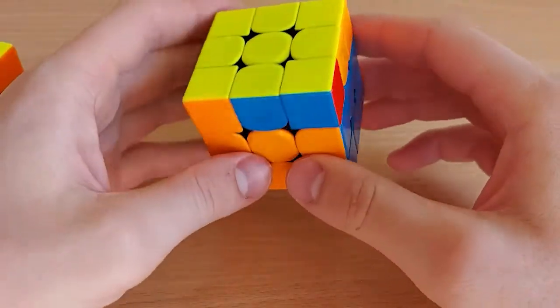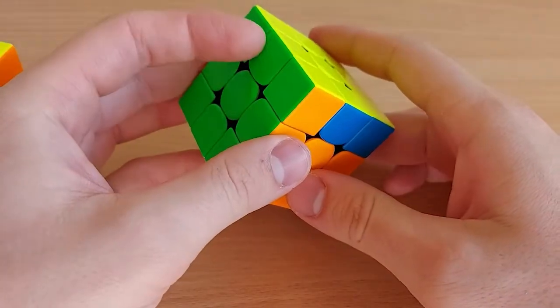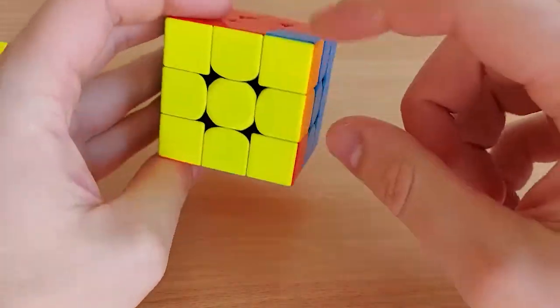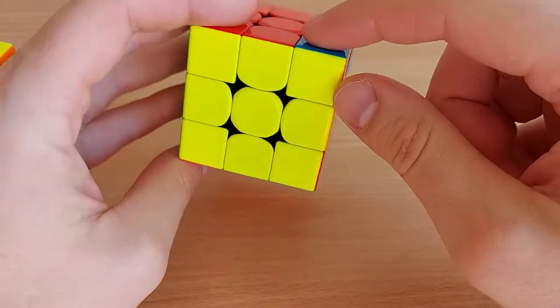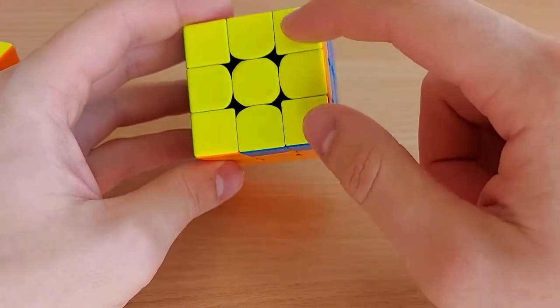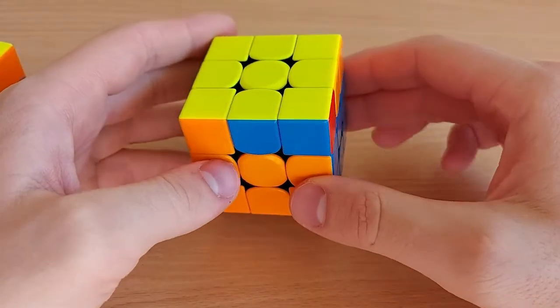So JB perm looks like this. So you have a bar over here and these two blocks are swapped. So these two edges and these two corners need to be swapped.